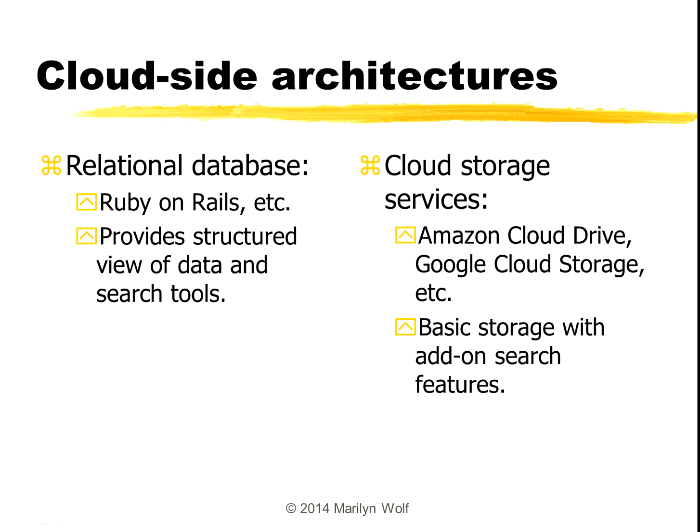There are two ways to think about the cloud side architecture. One is a traditional relational database, and we can build this kind of application using systems like Ruby on Rails or other database building systems of your choice. A relational database has a structured view of data and provides very powerful tools that allow us to search on that data. On the other hand, there are cloud storage services from a variety of providers, and the basic storage services are what we call flat data — they don't have any particular structure, but you can put search features on top of this data.